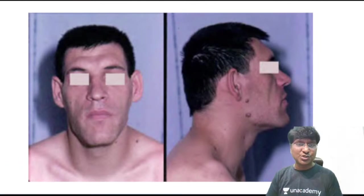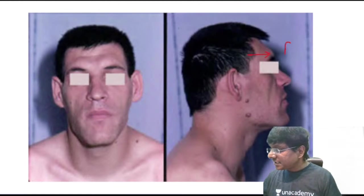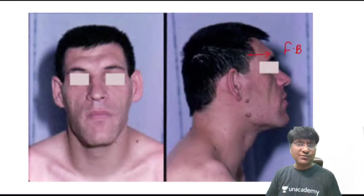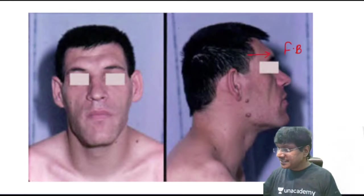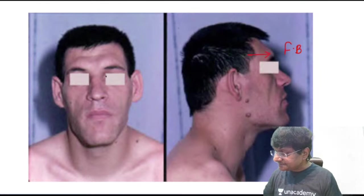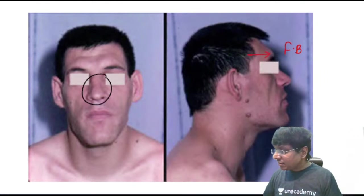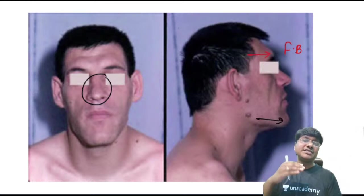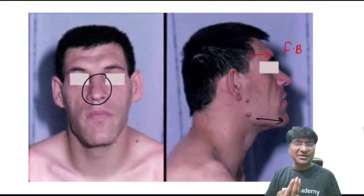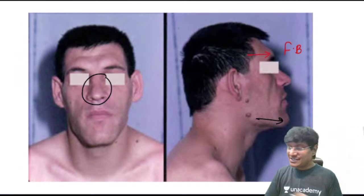Facial features of acromegaly: frontal bossing, broad nose, protrusion of the jaw (prognathism), and widely spaced teeth. For the hands and lower limbs: large broad hands with swollen fingers, causing increased glove size. The shoe size also increases due to foot enlargement.